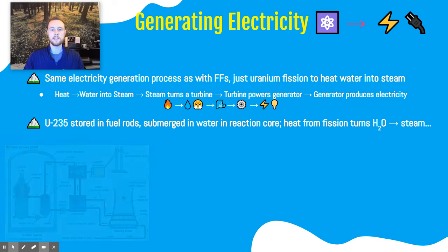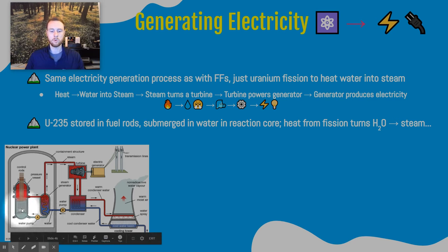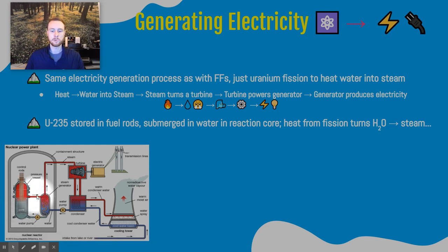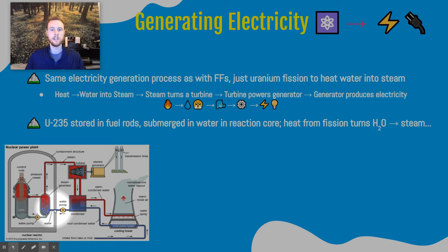Looking at this diagram, here's our reactor core where the fuel rods are stored and fission is occurring. We pump cool water past the core, and the reaction generates a ton of heat, producing super hot water that's turned into steam. That steam turns the turbine, which powers the electric generator to create electricity. We can reuse that water — in a cooling tower, some of it will evaporate, giving off water vapor, and some will cool and condense back into liquid that we can cycle back through and use again.